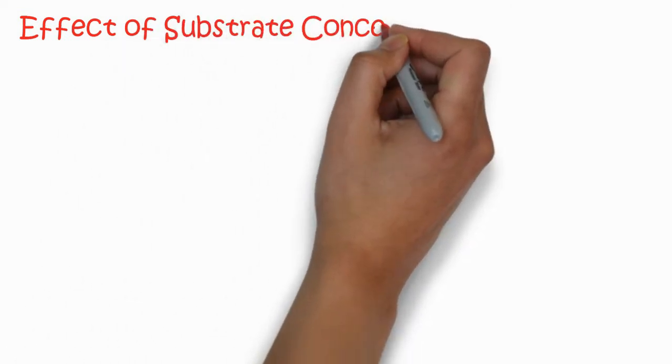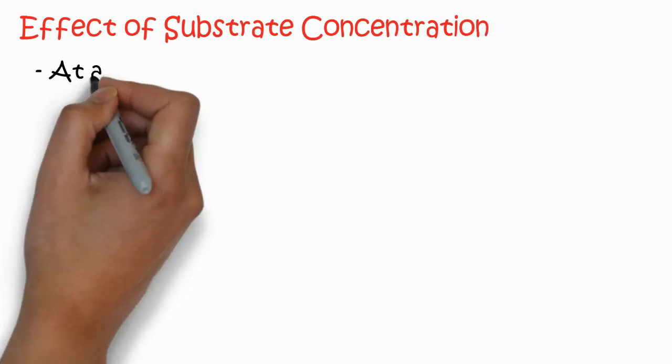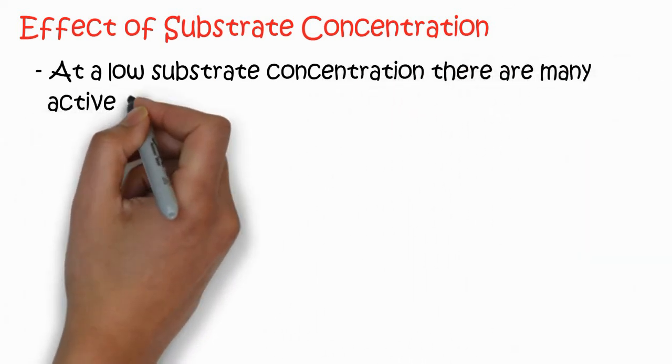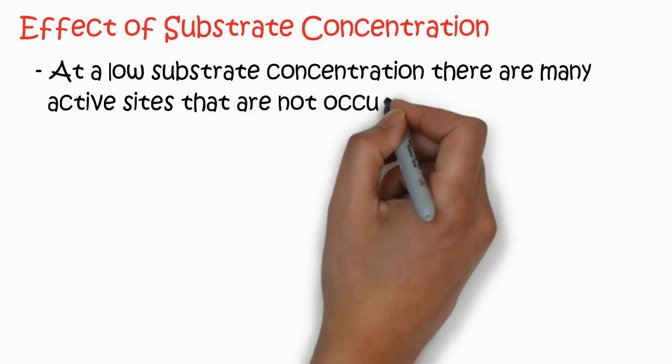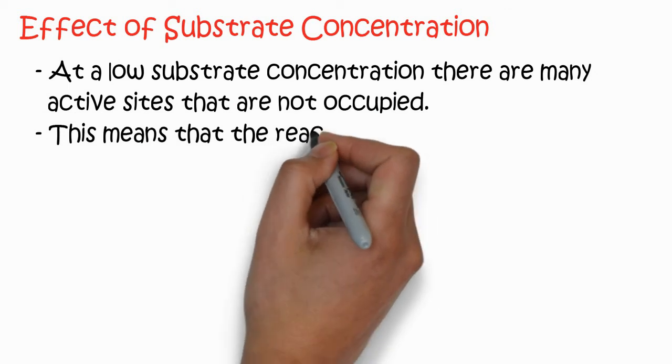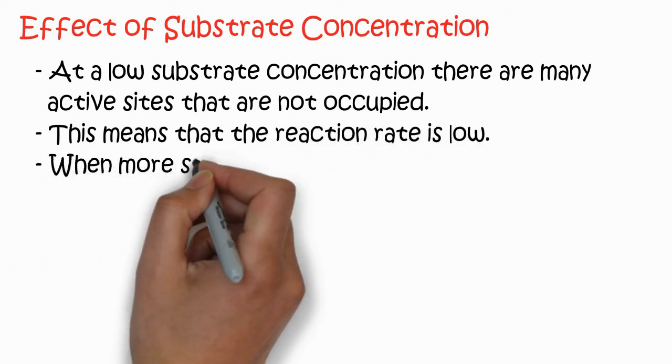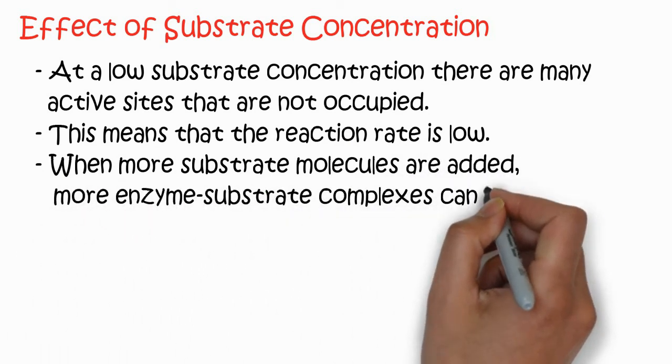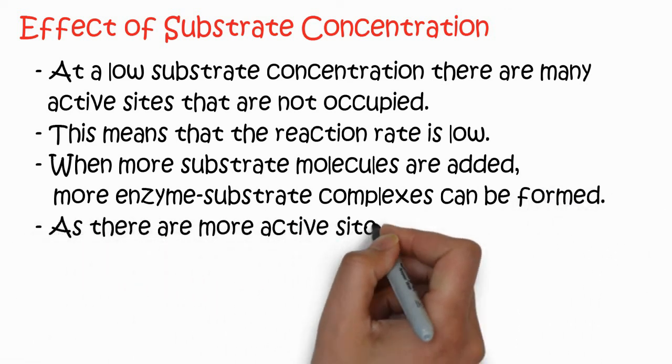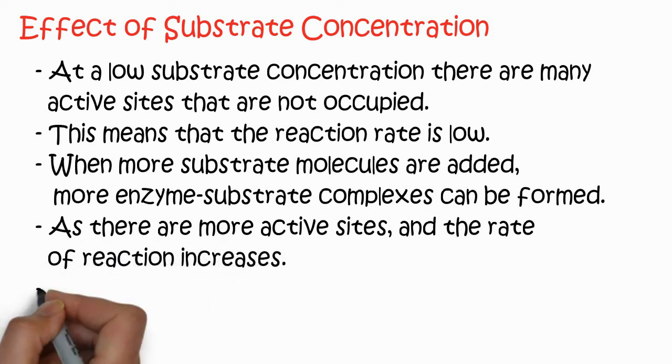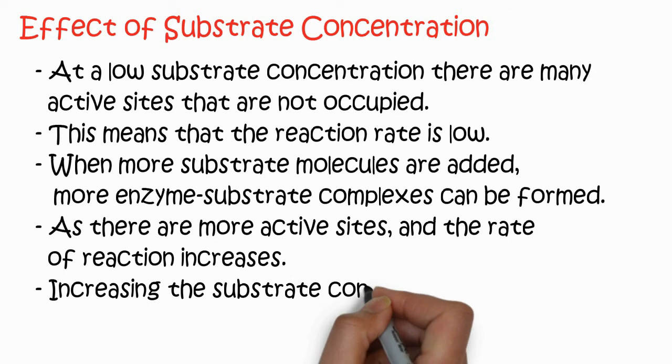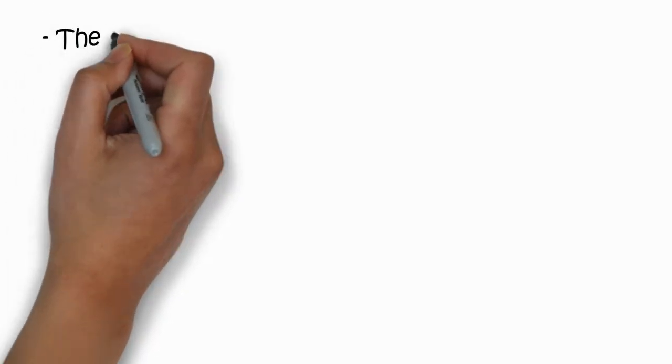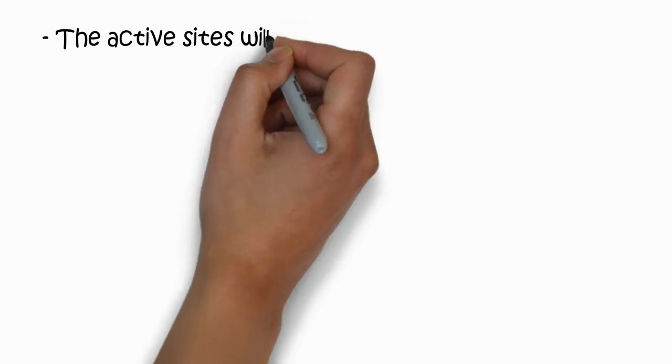Now, how does substrate concentration affect the enzyme activity? At low substrate concentration, there are many active sites that are not occupied. This means that the reaction rate is low. When more substrate molecules are added, more enzyme-substrate complexes can be formed as there are more active sites, and the rate of the reaction increases.